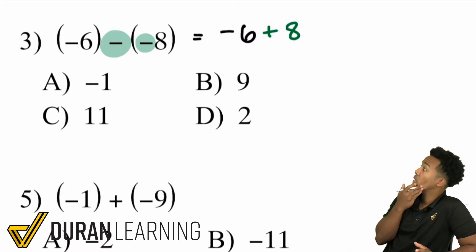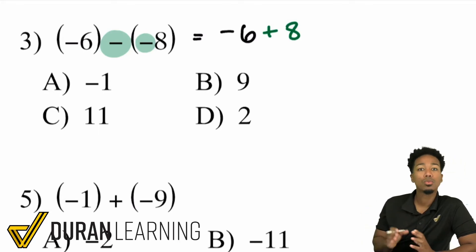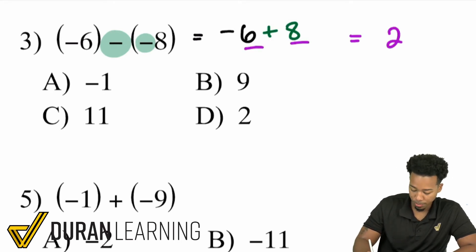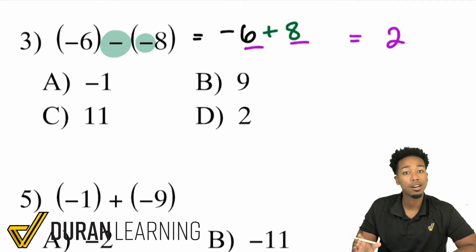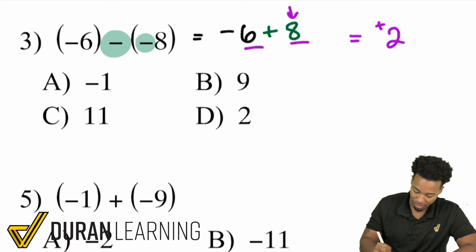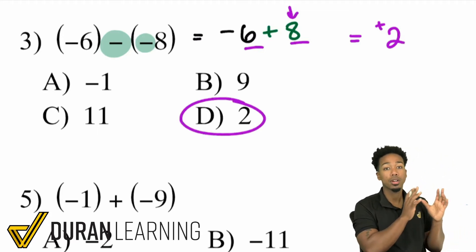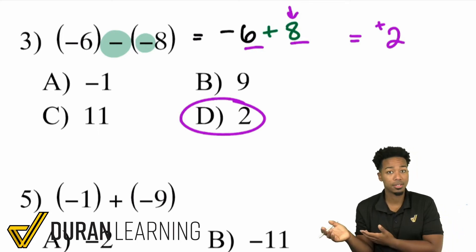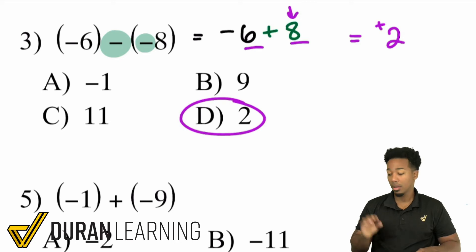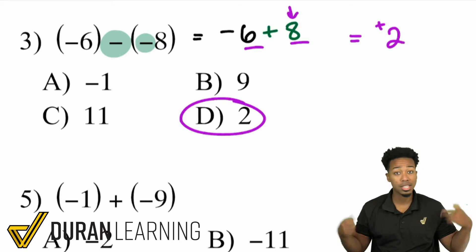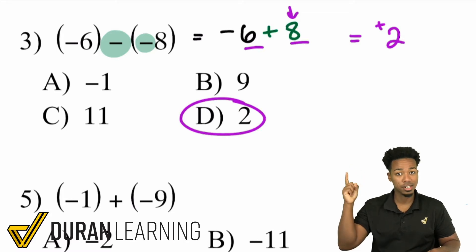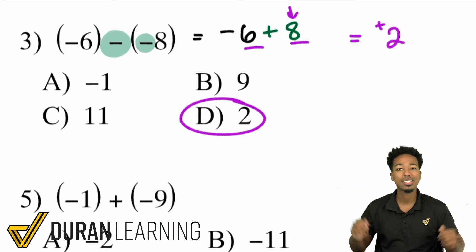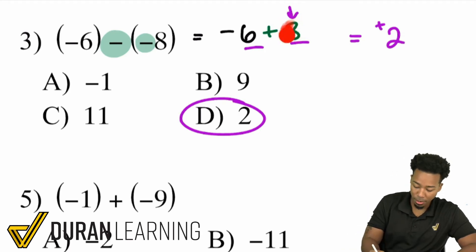So looking at negative 6 plus 8, you're going to subtract the two numbers and take the difference. How far away are 6 and 8? That's going to be 2. And you're going to keep the sign of the bigger number. The 8 is the bigger number, so it'll stay positive 2. When you're negative and subtracting, you're getting more negative. When adding two numbers that are the same sign, just add and keep the sign. But when the signs are different, take the difference and keep the sign of the bigger number.